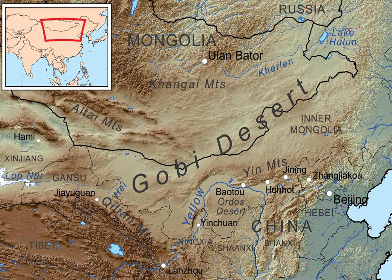Eastern Gobi Desert Steppe is the easternmost of the Gobi ecoregions, covering an area of 281,800 square kilometres. It extends from the Inner Mongolian Plateau in China northward into Mongolia.